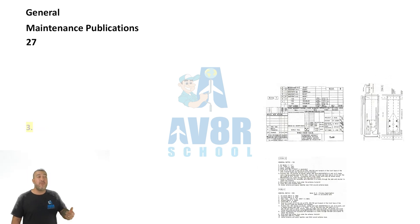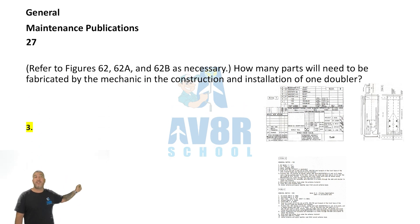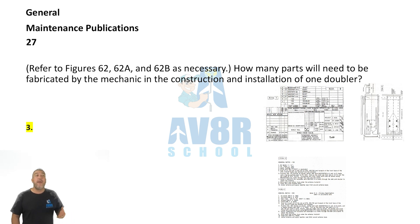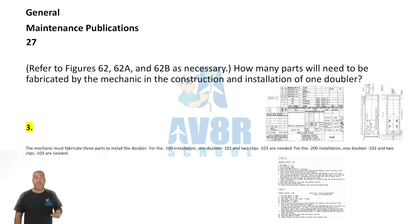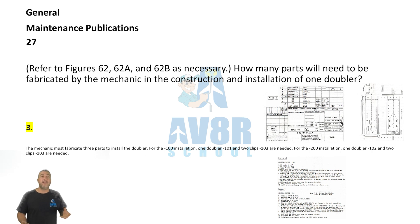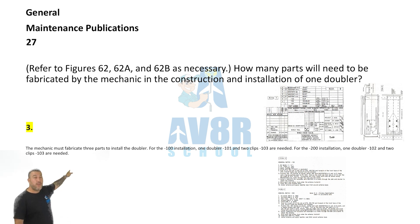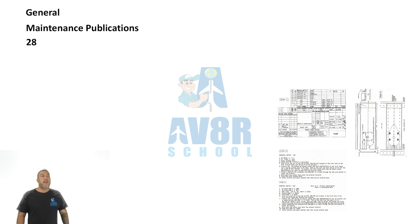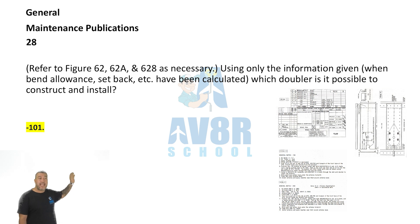Number 27: Using the same figures 62a and 62b, how many parts will need to be fabricated by the mechanic for the construction and installation of one doubler? The answer is three parts. The figures specifically tell you how many parts the mechanic must fabricate during installation.